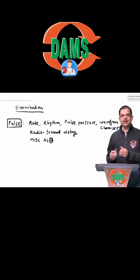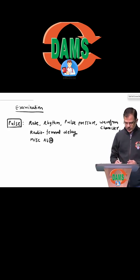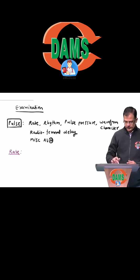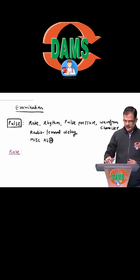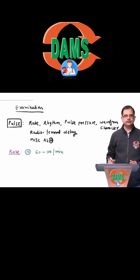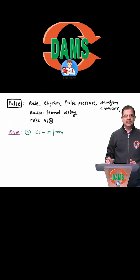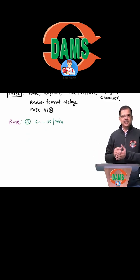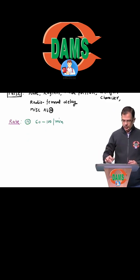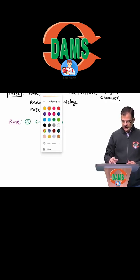The normal pulse rate ranges from 60 to 100 per minute. The abnormality: if it is less than 60, it is bradycardia; more than 100, it will be tachycardia. So the first abnormality is tachycardia.